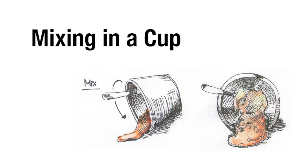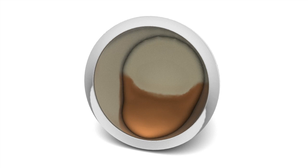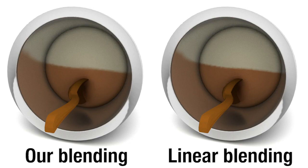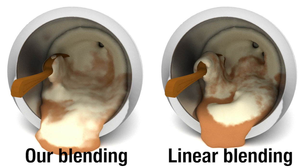Next, we prepared a fluid consisting of a honey-like material and a mayo-like material. Without interaction, the fluid flows slowly. Blended with a spoon, the fluid looks less viscous and exhibits interesting dynamics. With a linear approach, the fluid appears more viscous.